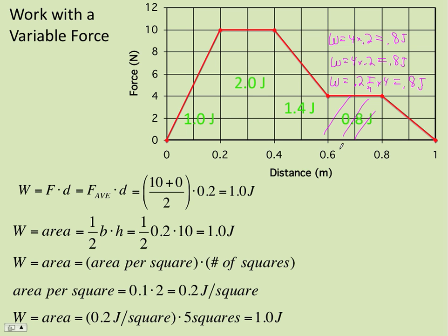And then finally, this last triangle. You can use the average idea. The work is the average force. It starts at 4, ends up at 0. So 4 plus 0 over 2. Averaging those two together times the base, which again is 0.2. And so you get 0.4 joules. Makes sense, right? It's half of what this one is because the line cuts it right in half. So if you see things like that, take advantage of them.